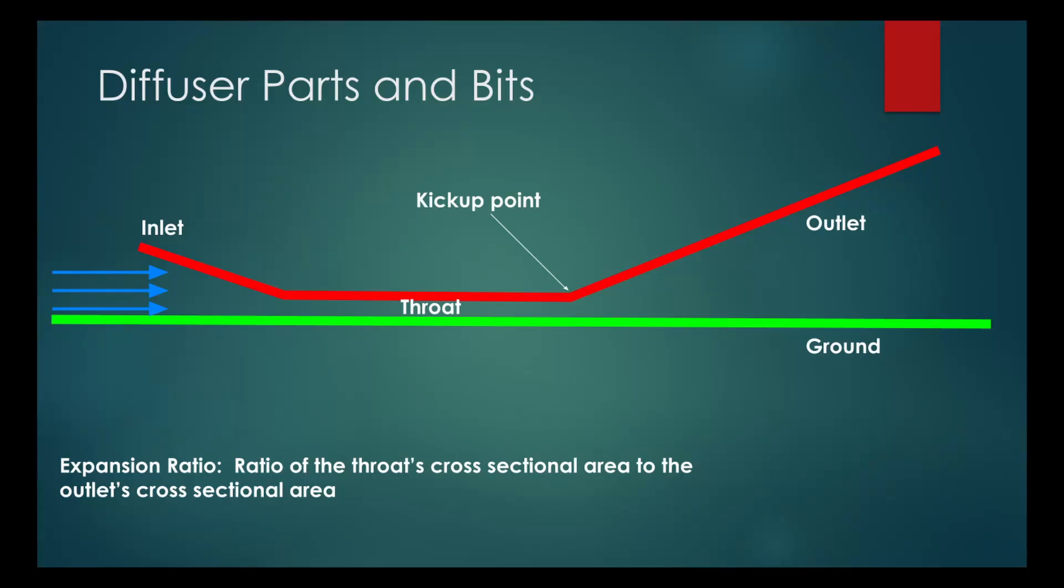Most modern race cars today have actual flat floors or relatively shallow venturi tunnels that run the length of the car, leading to an expansion area or an outlet section at the back of the car. The diffusers typically have a relatively square profile with some rounded edges.